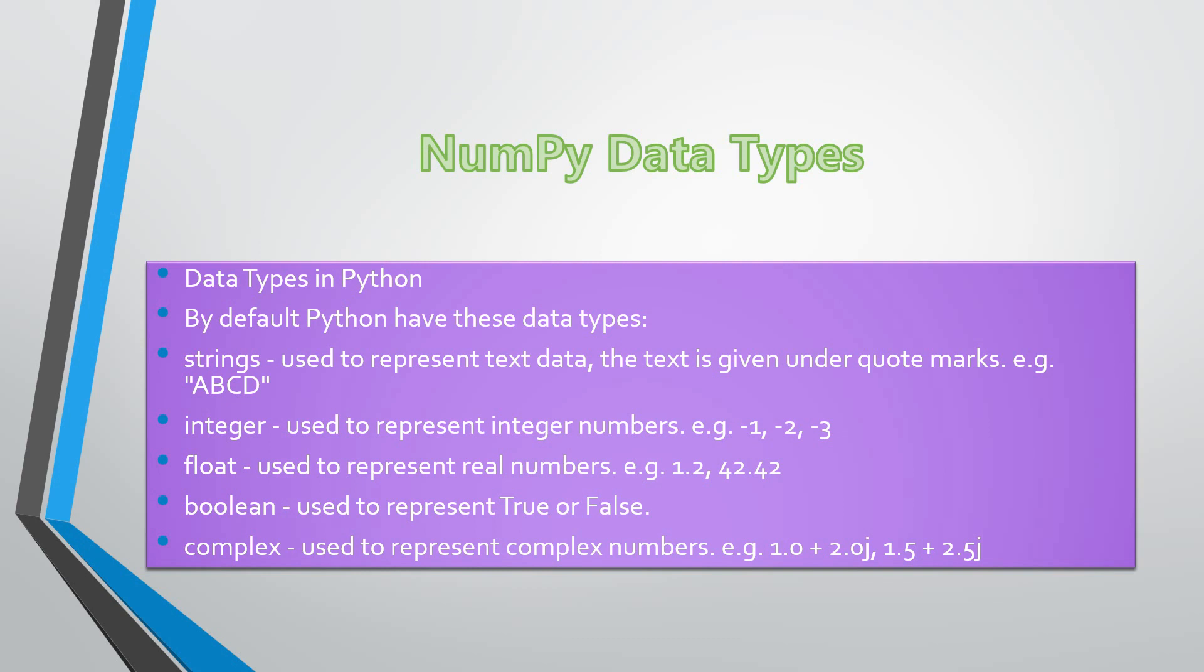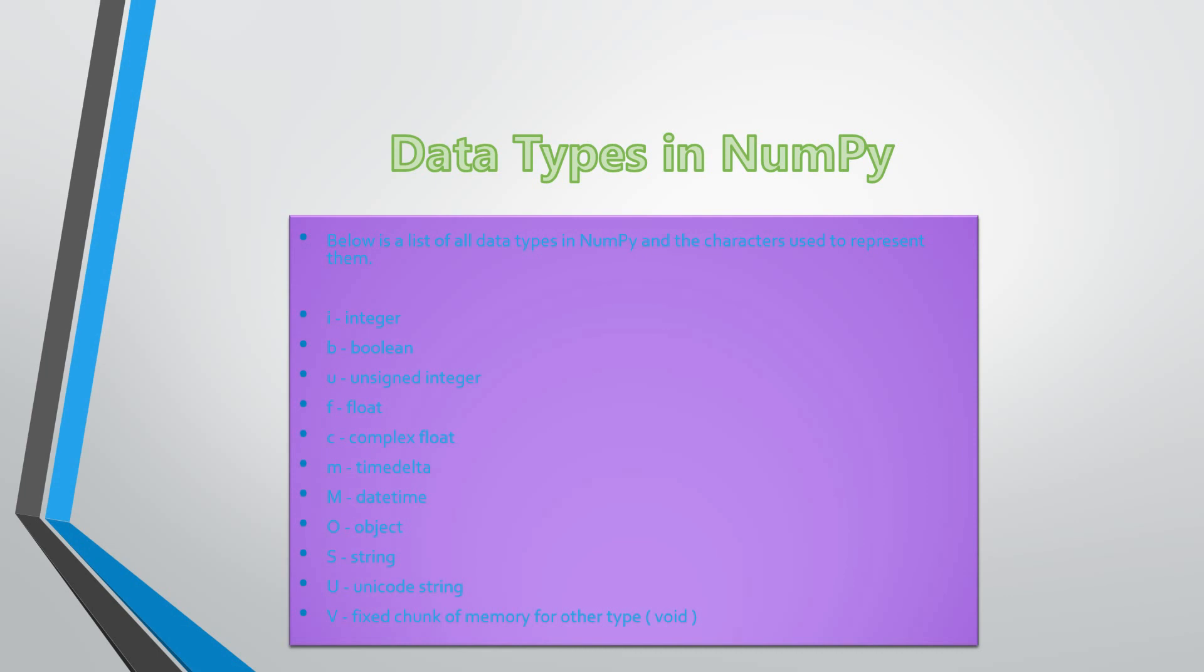Now these are the data types which are exactly accepted by NumPy in Python. For example, if the data types in NumPy are defined: i as an integer, b as a boolean, u as an unsigned integer, f as a float, c as a complex float, m as a time delta, m as a date, m as datetime, o as objects, s as string, u as unicode string, and v as fixing of memories for other types like void.